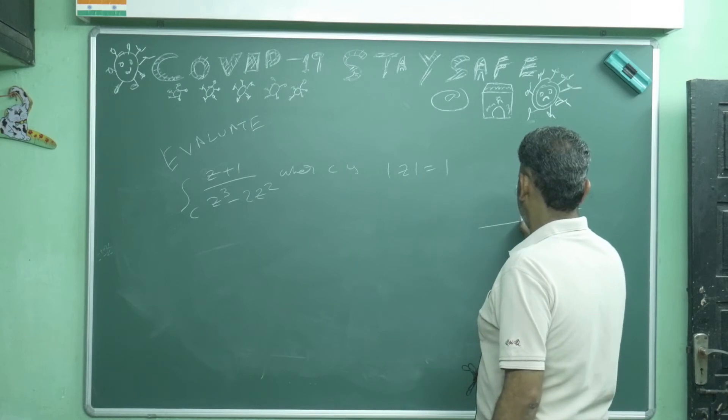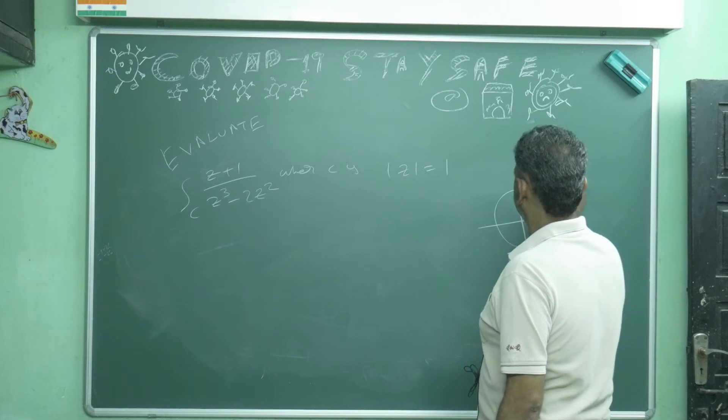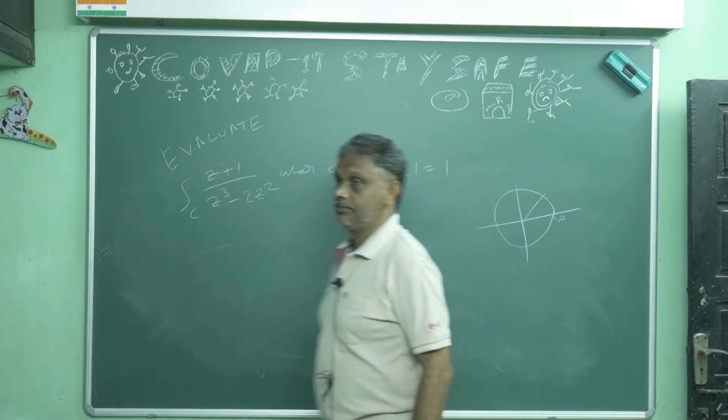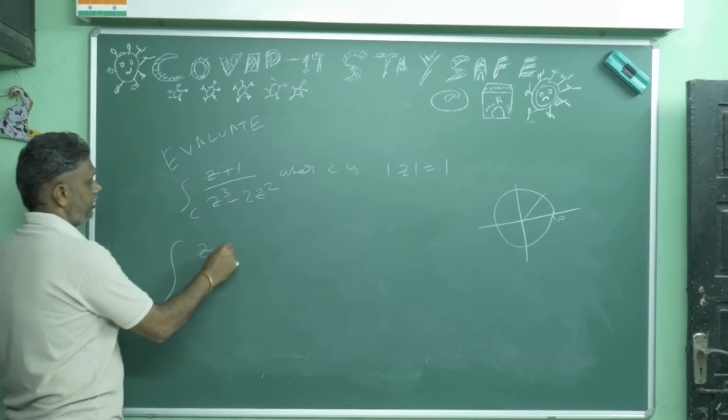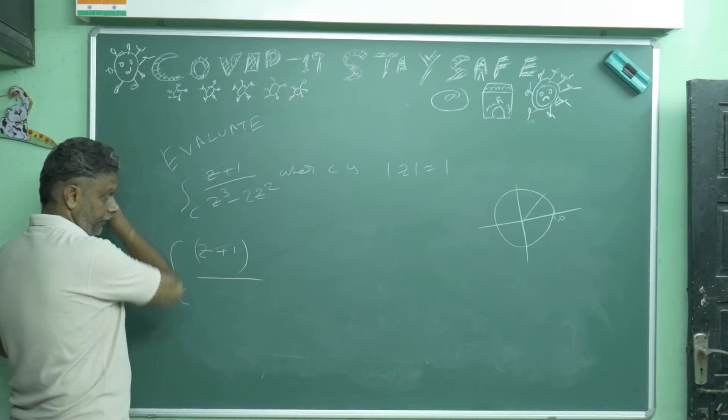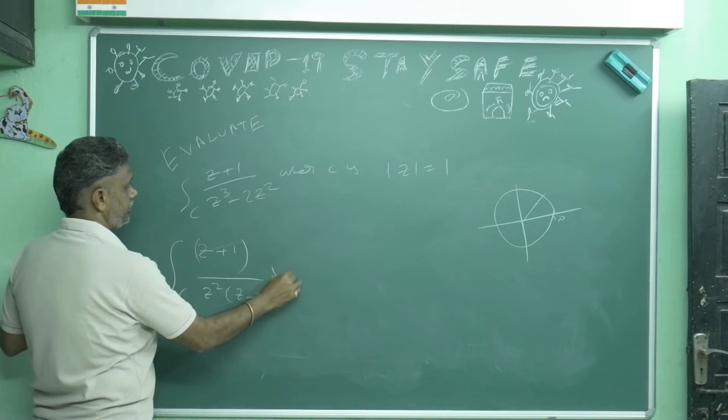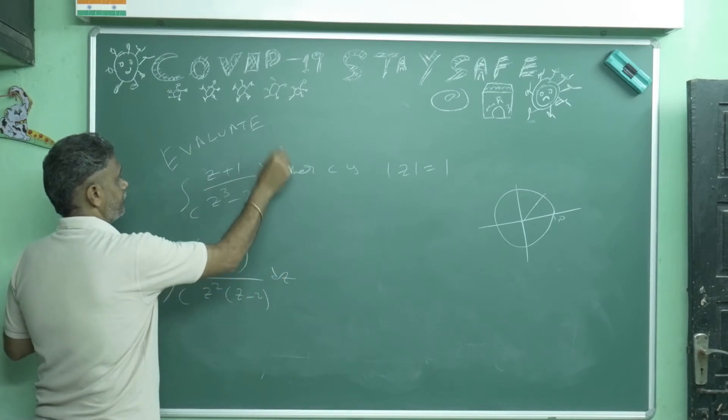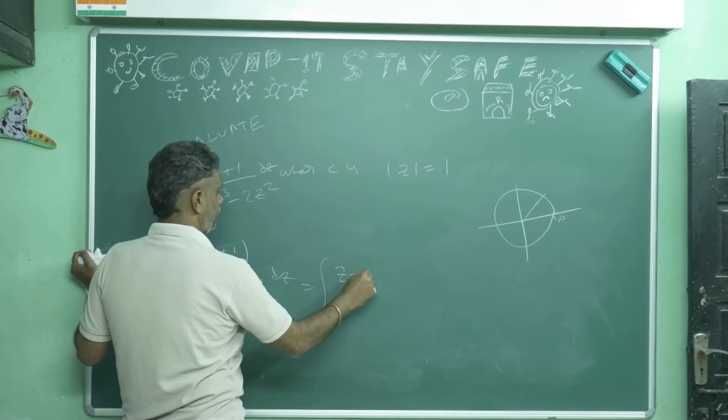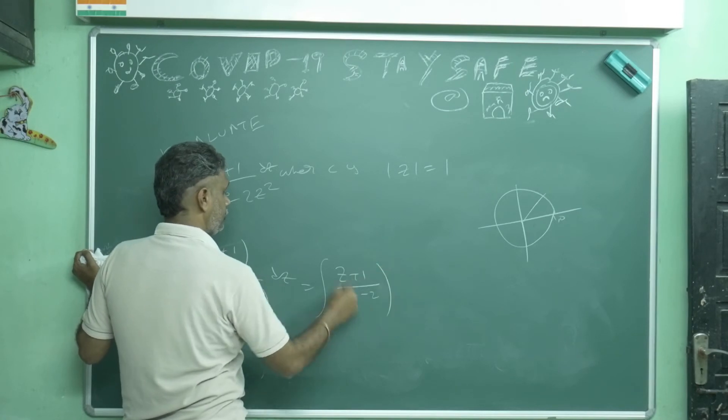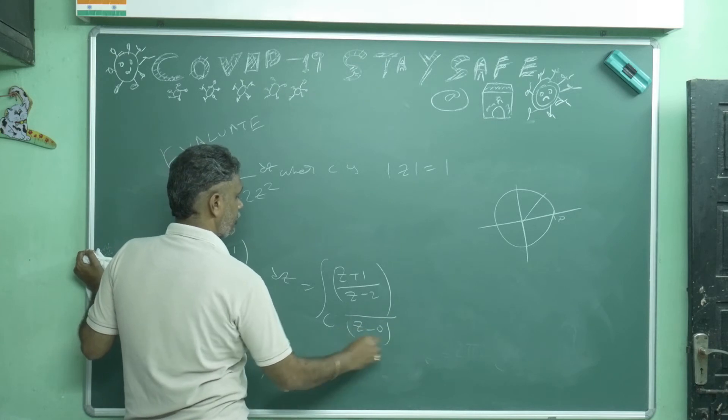Radius is 1. Now this whole problem I will write as integral over c of (z+1) by z squared, if you take z squared common, times (z-2) dz. Now I will write (z+1) by (z-2), this whole thing I will call f of z, and this is (z-0) whole square.